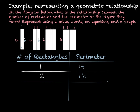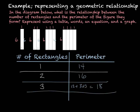For three rectangles, we still have the twelve from the two sixes, and then we add three plus three — or three times two — which gives eighteen. For four rectangles, it's still twelve, and then four on top and four on bottom — four times two — which makes twenty.